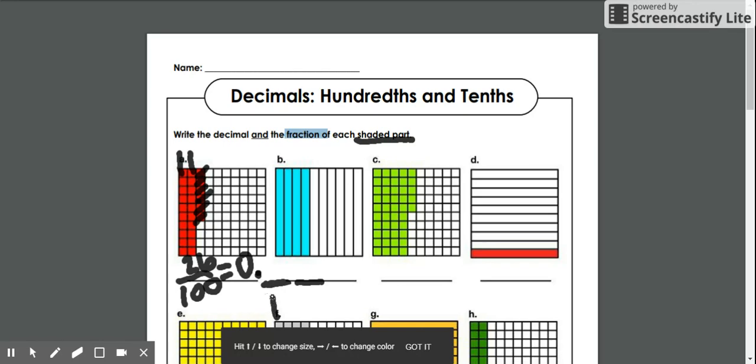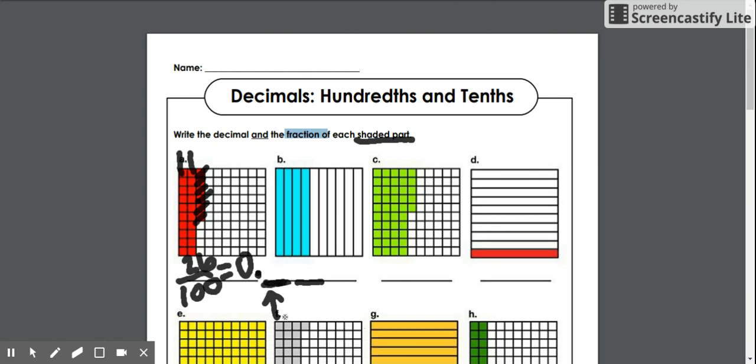The next one is hundredths. Now boys and girls, that's something you have to memorize, but I like to say if you just see one place value spot, it's tenths. If you see two place value spots, it's hundredths. Remember, this example was divided into 100 pieces. 26 of them are shaded, so I can put the number 26 inside.